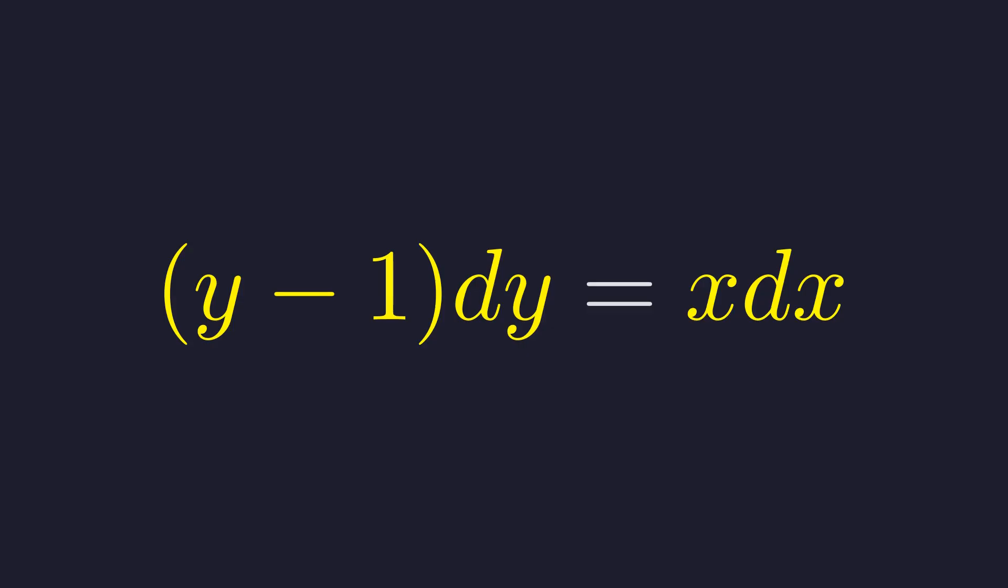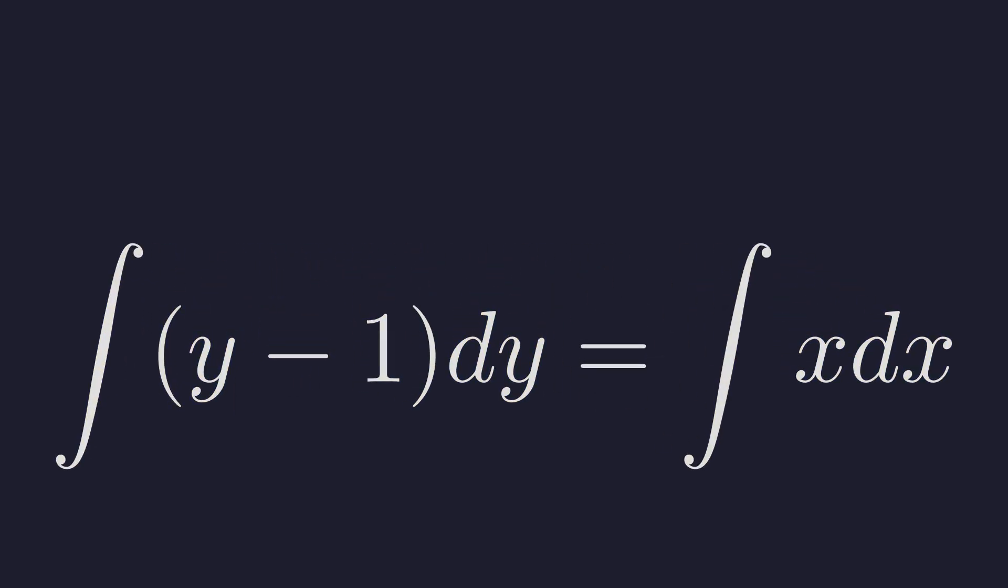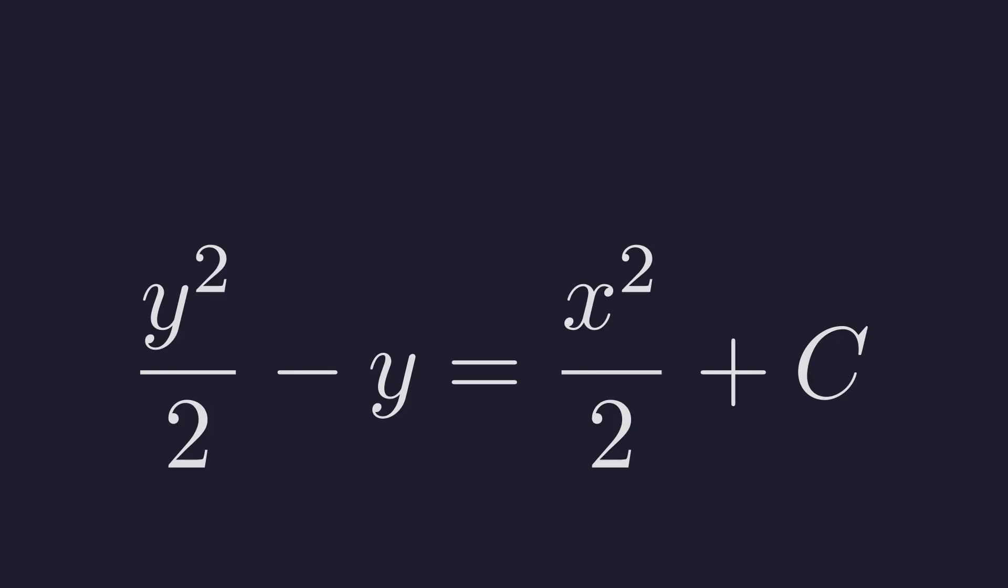Now that the variables are separated, we can integrate both sides to solve for the relationship between y and x. We apply the integral operator to each side. Using the power rule for integration on both sides yields the next step. The integral of y minus 1 is y squared over 2 minus y. And the integral of x is x squared over 2 plus a constant of integration, c.